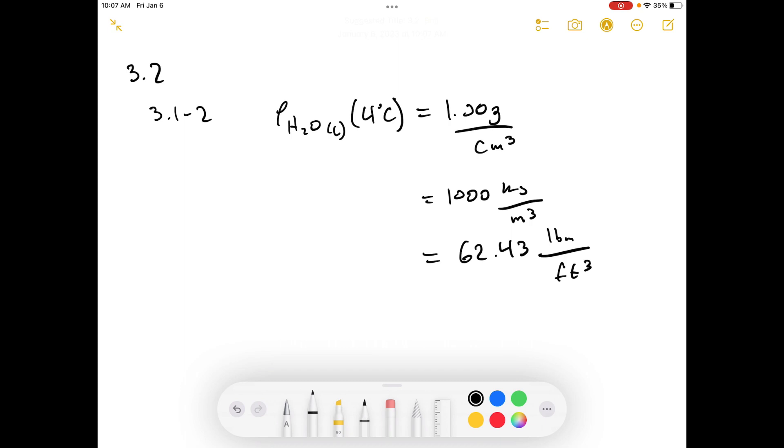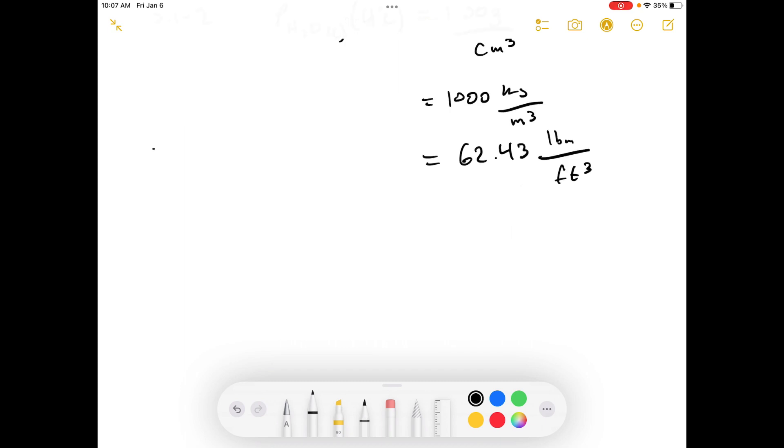I'll show you an example of how to convert using that in this problem. We're doing a liquid of density 995 kilograms per meter cubed and we're converting that. So for the first conversion, we'll use the inside front cover.